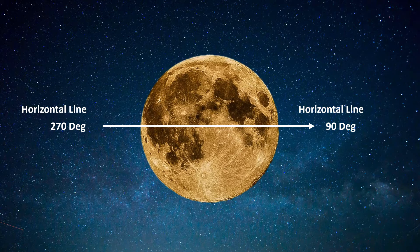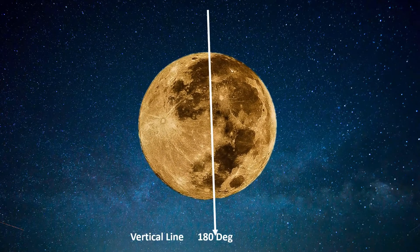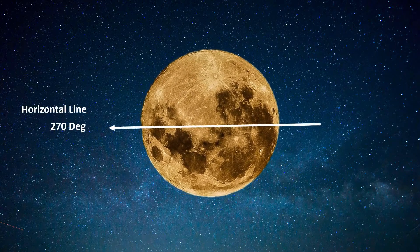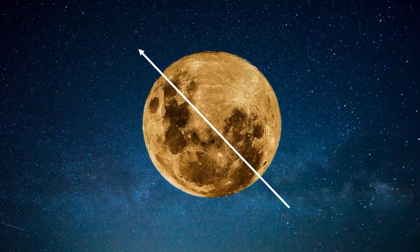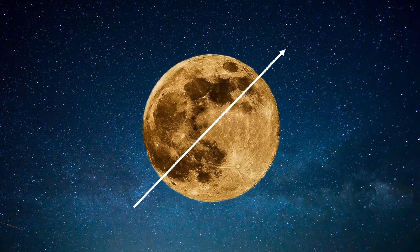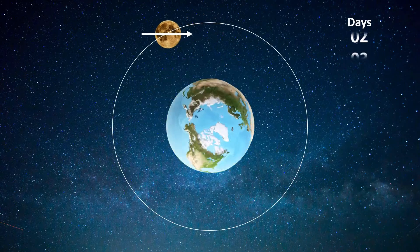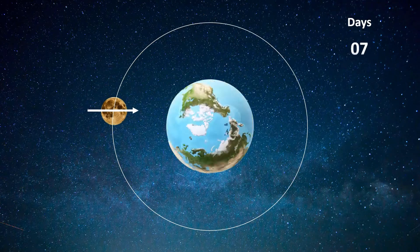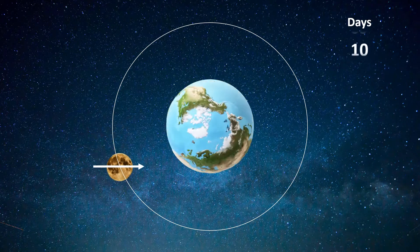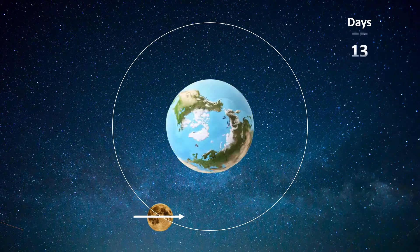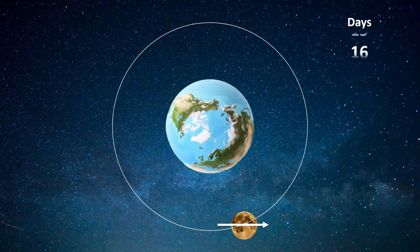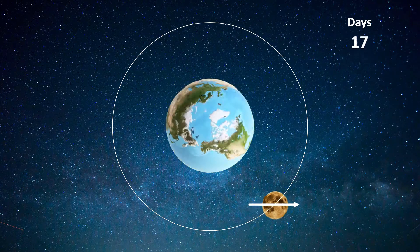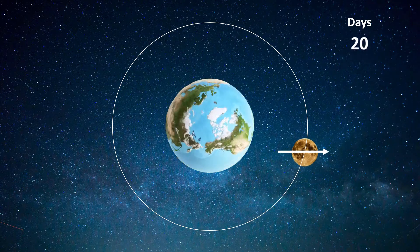Let's add an arrow to make the rotation of the moon more apparent. Note that as the moon rotates, the line goes from vertical to horizontal to vertical to horizontal and so forth — that means it's rotating. What if the moon didn't rotate and it only revolved around us like this? We would still be able to see all sides of the moon, right?